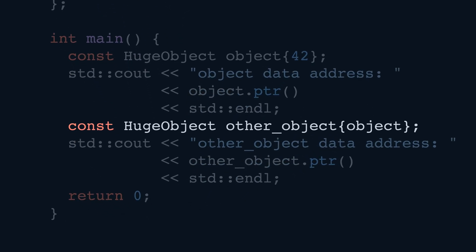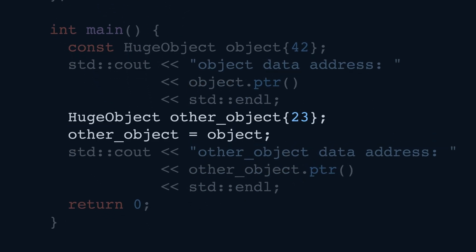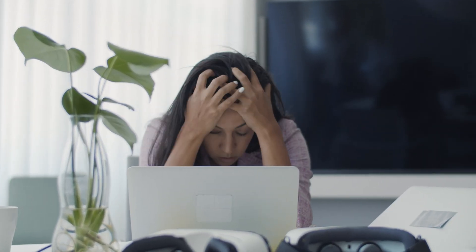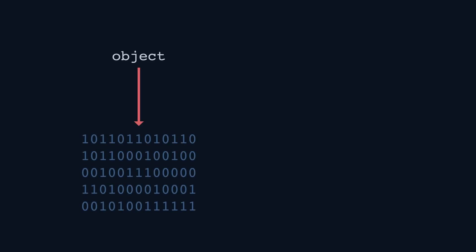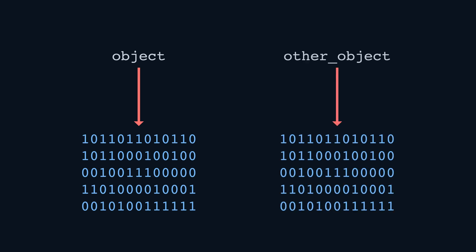Unfortunately, we still can't remove the annoying comment yet. Instead of creating another object by copying directly, if we first create a new object and then assign to it, we get exactly the same runtime error as before. The helpful compiler also generates a trivial copy assignment operator, which we've already seen in the previous video. The situation here is actually worse than with the copy constructor: not only do we get a runtime error when objects are destroyed, but we also have a memory leak from the moment we perform the assignment, as the memory allocated for the other object is never freed.